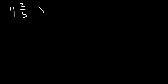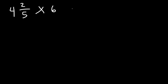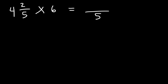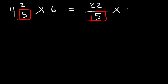Let's multiply 4 and two-fifths by 6. In the first method, I'm going to convert this into an improper fraction. Multiply 4 and 5, which is 20, then add 2. The denominator remains the same, so 4 and two-fifths is the same as 22 over 5.